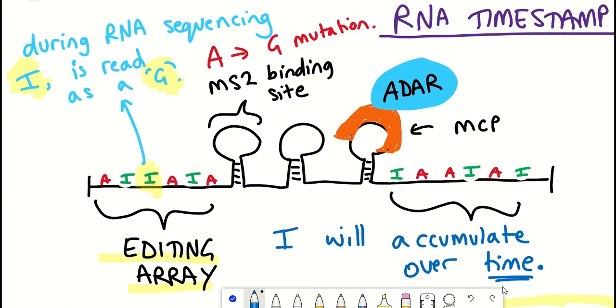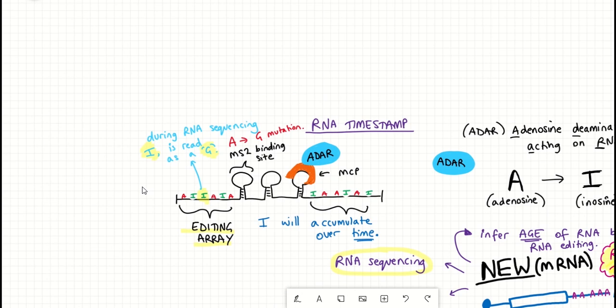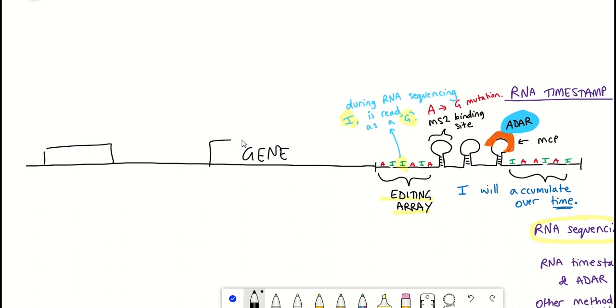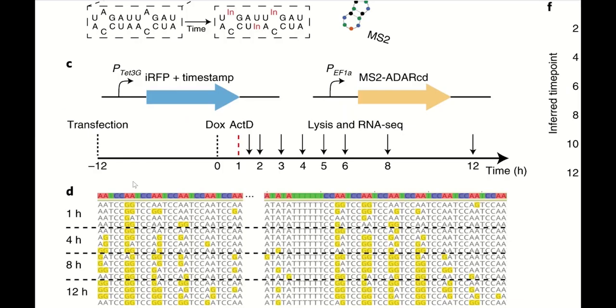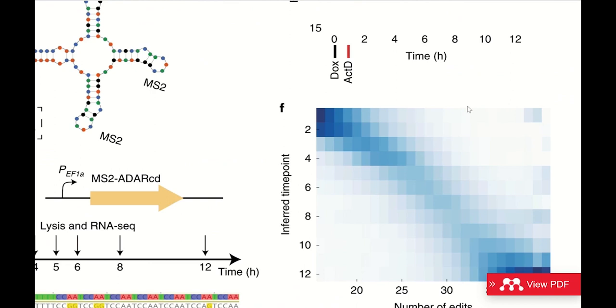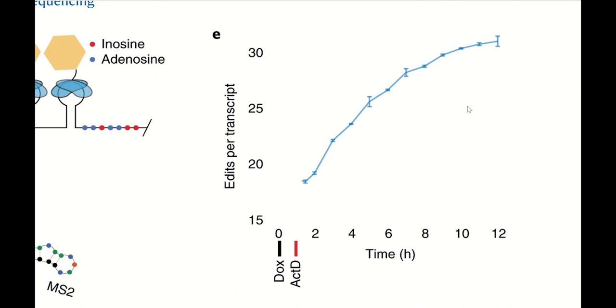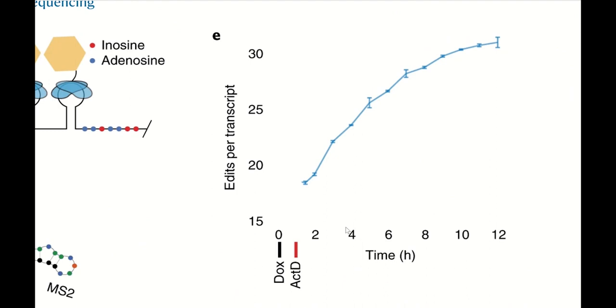So the number of inosine molecules, in theory, provide a readout for how old the RNA is. So does this actually work? So to calibrate the system and to see how it's working, the authors expressed a timestamped RNA under the control of a tetracycline response element, which means that when doxycycline is added to the cells, the timestamped RNA will be expressed. So they added doxycycline for one hour to induce expression of their timestamped RNA, and then subsequently added an inhibitor of further RNA transcription, and then looked at the number of inosine edits within the RNA over a 12-hour time course. As you can see in this figure here, as the time increases up to 12 hours, the number of edits per RNA transcript also increases. And so this effectively proves that this RNA timestamp can be a readout for the age of the RNA.